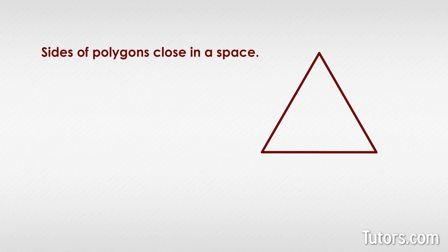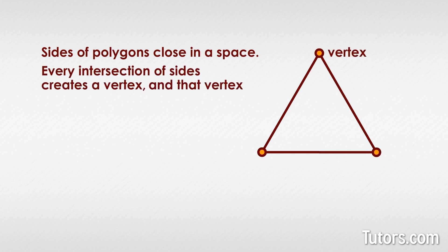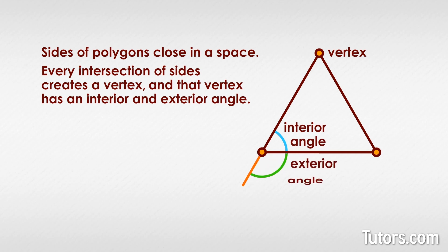From the simplest polygon, a triangle, to the infinitely complex polygon with many sides, sides of polygons close in a space. Every intersection of sides creates a vertex, and that vertex has an interior and exterior angle. Interior angles of polygons are within the polygon.